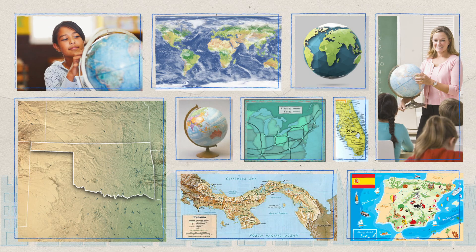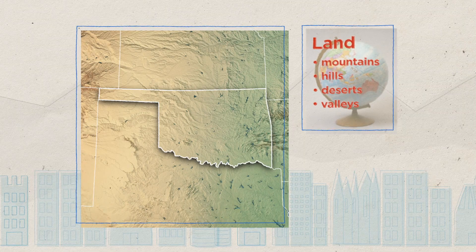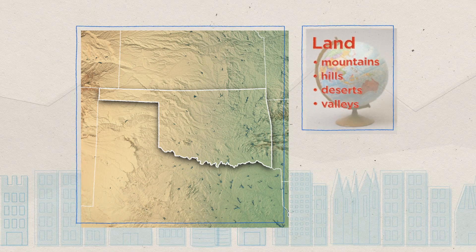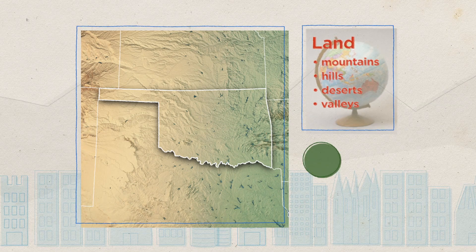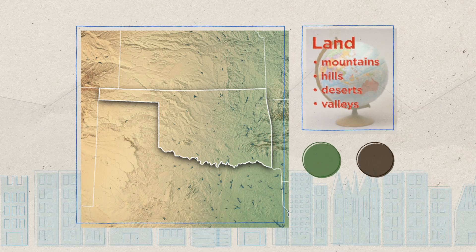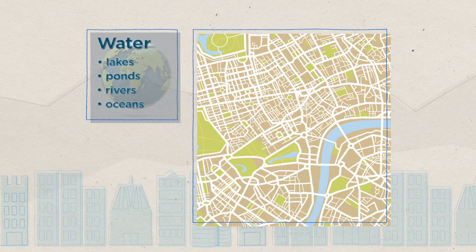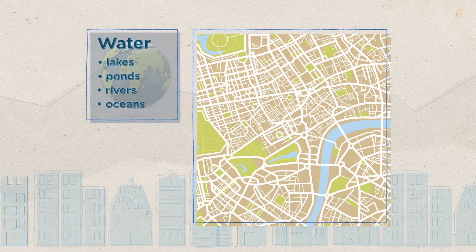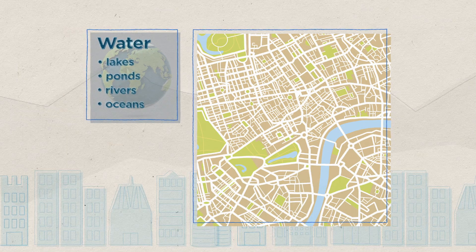The colors are a big clue. Mountains, hills, deserts, and valleys are all types of land features. They are usually colored green or brown. Lakes, ponds, rivers, and oceans are all types of water features. These are usually colored blue.